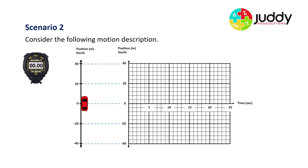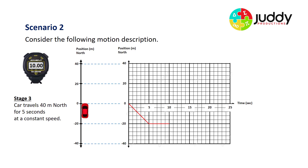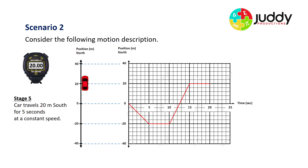Scenario two: let's consider the following motion description. Stage one: the car travels 20 meters south for five seconds at a constant speed. Notice we're using a different scale — up to 40 meters north and down to 40 meters south. Stage two: the car remains stationary for five seconds — a flat line between five and ten. Stage three: the car travels 40 meters north for five seconds at a constant speed, from minus 20 up to positive 20. Stage four: stationary for five seconds. Finally, the car travels 20 meters south for five seconds, returning to the starting point.